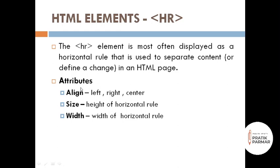Horizontal rule has 3 attributes: align, size, and width. Align — you can set your rule to left side, right side, or center. Size — size sets the height of your horizontal rule. Width — width sets the width of your horizontal rule. By default, width is your parent element.